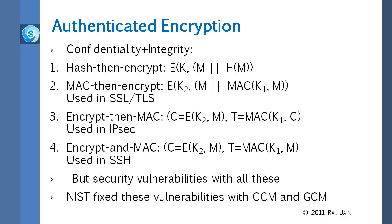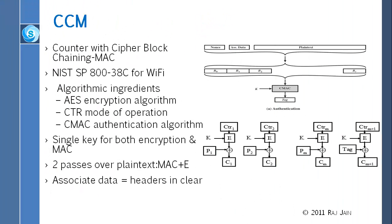All of these have some problems. NIST suggested two algorithms called CCM and GCM to fix those problems. CCM is Counter with Cipher Block Chaining, and this is used in Wi-Fi. The way it works is you take a counter, encrypt the counter, then XOR with the message to get the ciphertext. To the message you add something — P1 through PM is your message — and you add to it the tag calculated before. The tag is calculated by taking your plaintext, putting something in front of it, and running the whole thing through the MAC algorithm with the key.